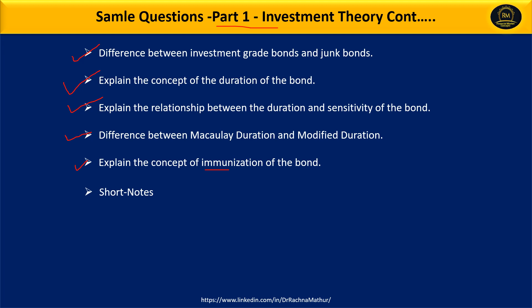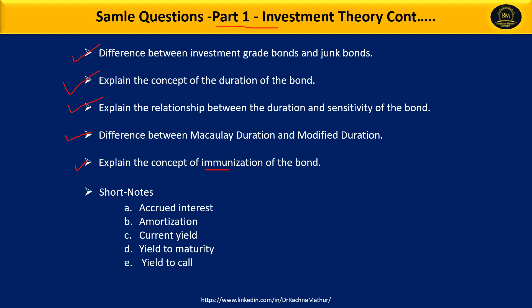Another important topic is the concept of immunization of a bond. Along with this, prepare short notes on accrued interest, amortization, current yield, yield to maturity, yield to call, and fixed income security. These are the sample questions collected from Unit 1 to help you prepare for this unit.